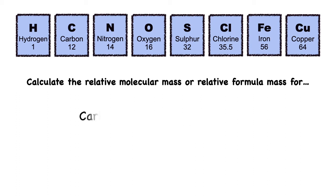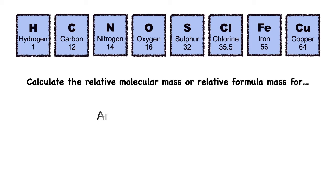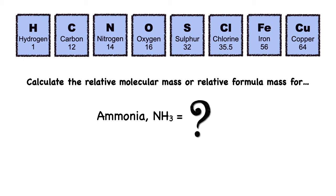Next is carbon dioxide, CO2. What is the R-MM for CO2? It's a combination of carbon and oxygen: carbon 12 plus oxygen 16 times 2, so the answer is 44. Next is ammonia, NH3. The relative atomic mass for nitrogen is 14 and hydrogen is 1, so 14 plus 3 times 1 equals 17.